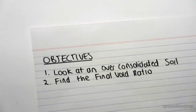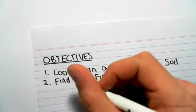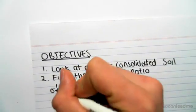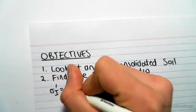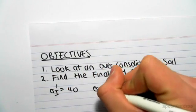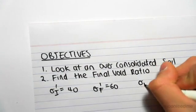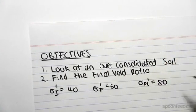Let's say for example, we're given this information. Let's say we're given that the sigma initial, so sigma subscript i, so the initial effective stress is 40 kPa, the final effective stress is 60 kPa, and the pre-consolidated stress is 80 kPa.